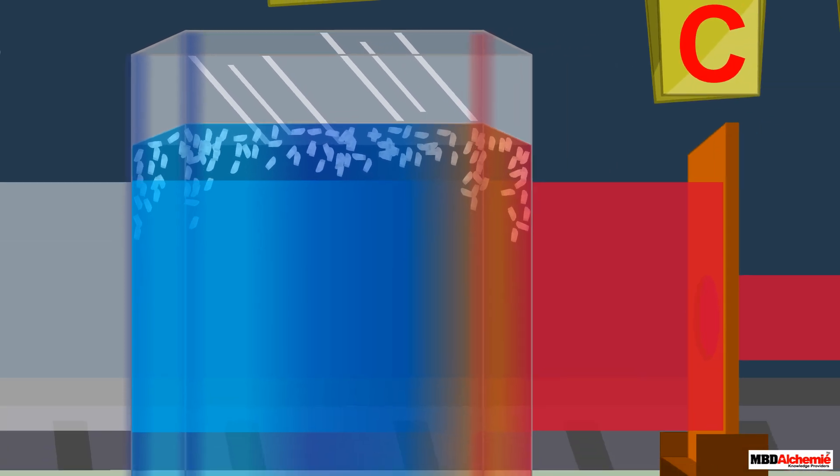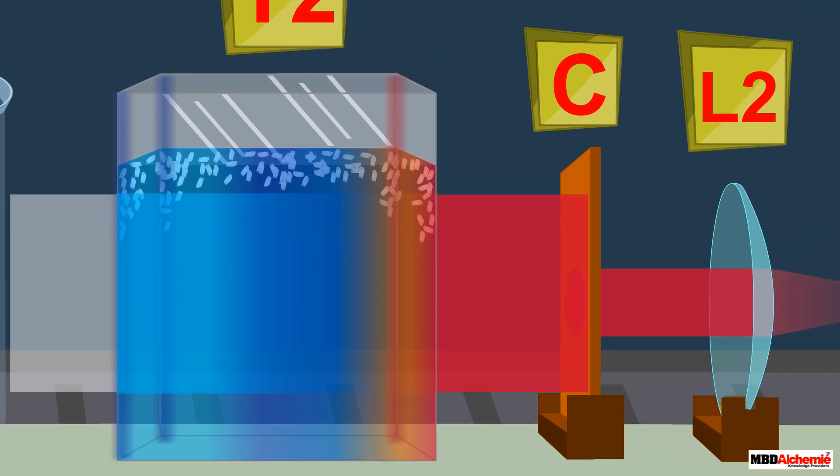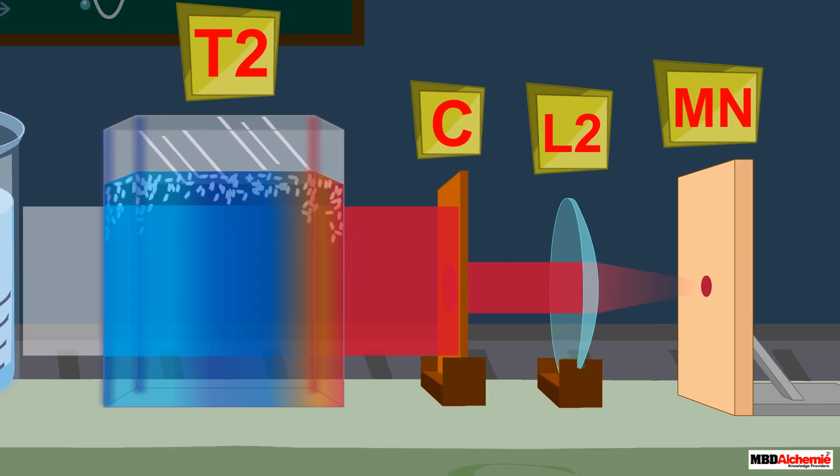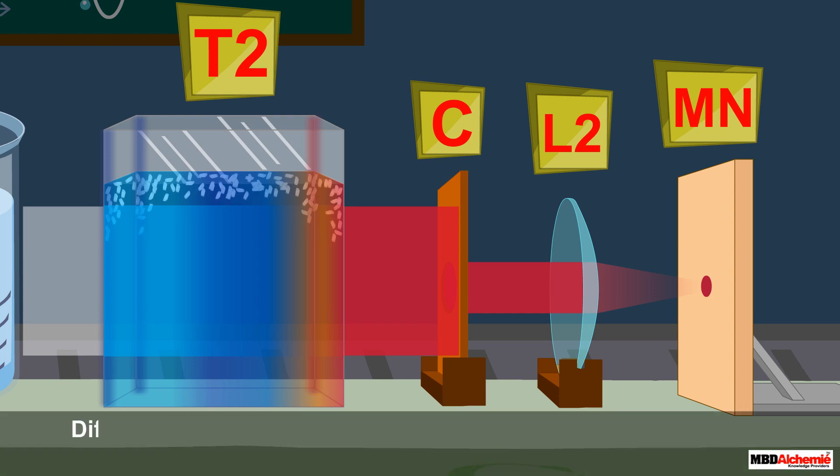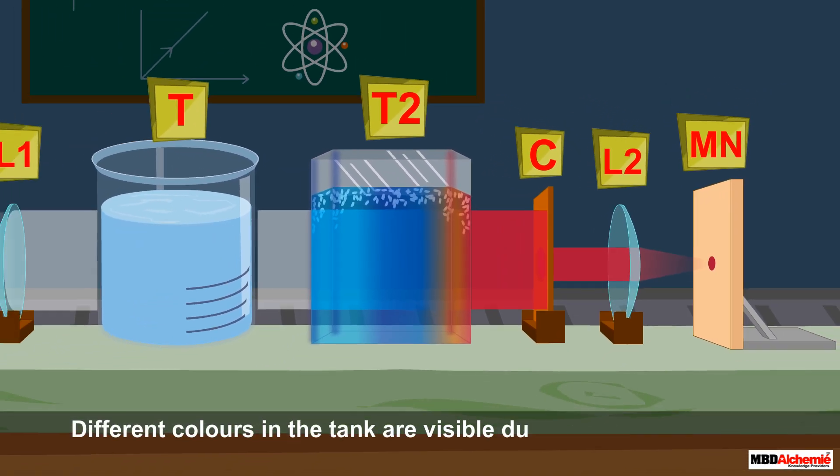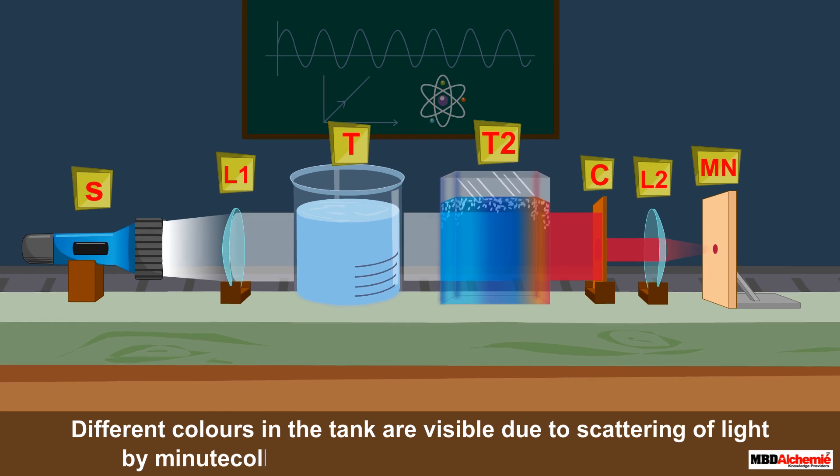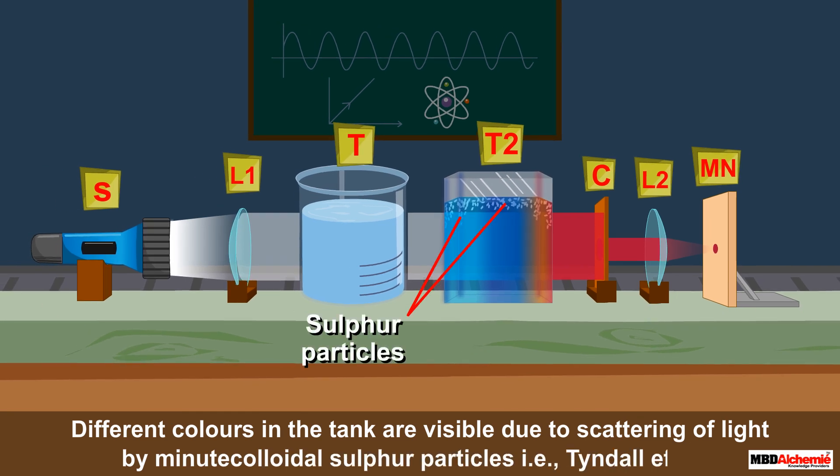When viewed from the fourth side of the glass tank, facing the circular hole, at first an orange red color and then a bright crimson red color are observed on the screen. This happens due to the scattering of light by minute colloidal sulfur particles, that is, the Tyndall effect.